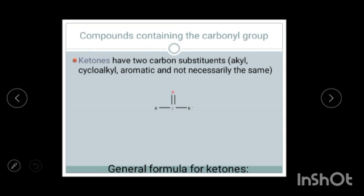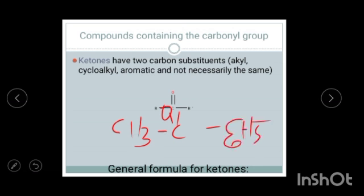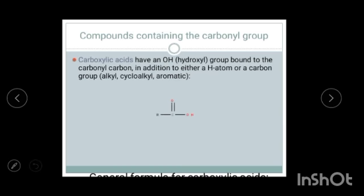Ketones have two carbon substituents — they may be alkyl or aromatic. For example, it can be in the form of CH₃-C=O-C₆H₅; they do not have to be the same. Ketones are compounds which have a C=O-R bond — the carbonyl carbon is bonded to two carbon groups.